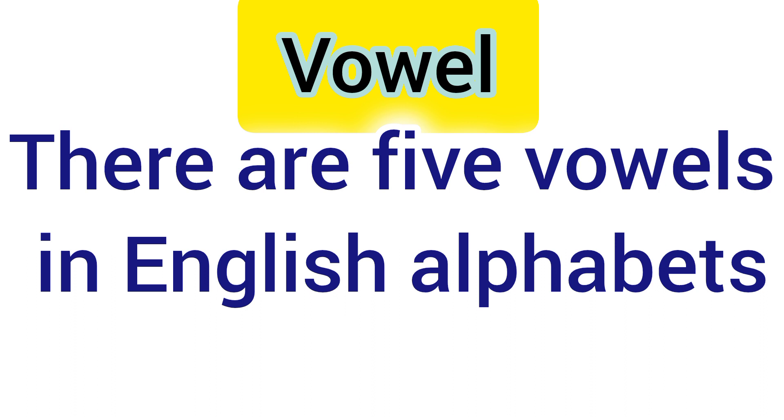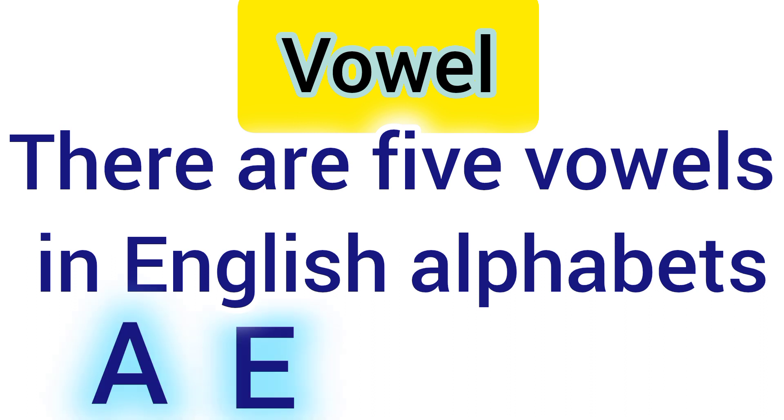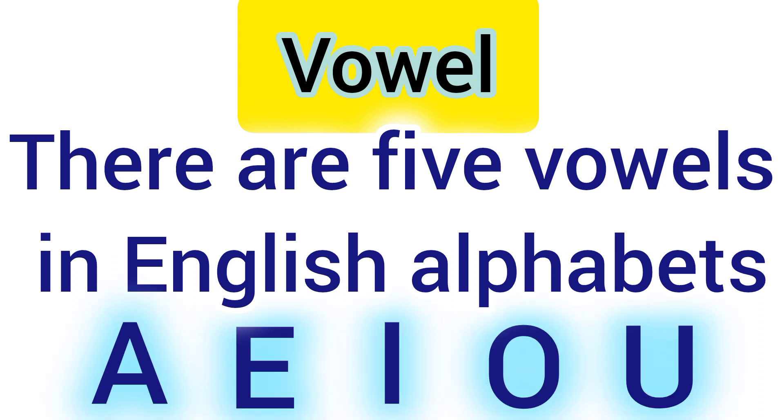Number one: vowel. Some students don't understand the pronunciation — the correct pronunciation is 'vowel'. There are five vowels in English alphabets: A, E, I, O, U.